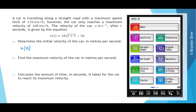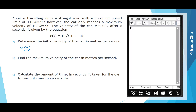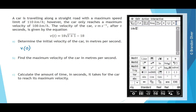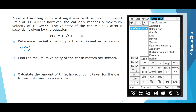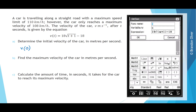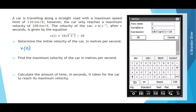On the CAS calculator, go into the main menu. Because we're going to be using this rule a fair bit, we're going to start by defining it. We type it in: 18, and we can bring up the keyboard and use the square root. Instead of t, we'll put x in, with x plus 1 under the square root sign, and then subtract 18. We highlight that rule, go to Interactive, Define, and change the function name from f to v of x to represent the velocity.